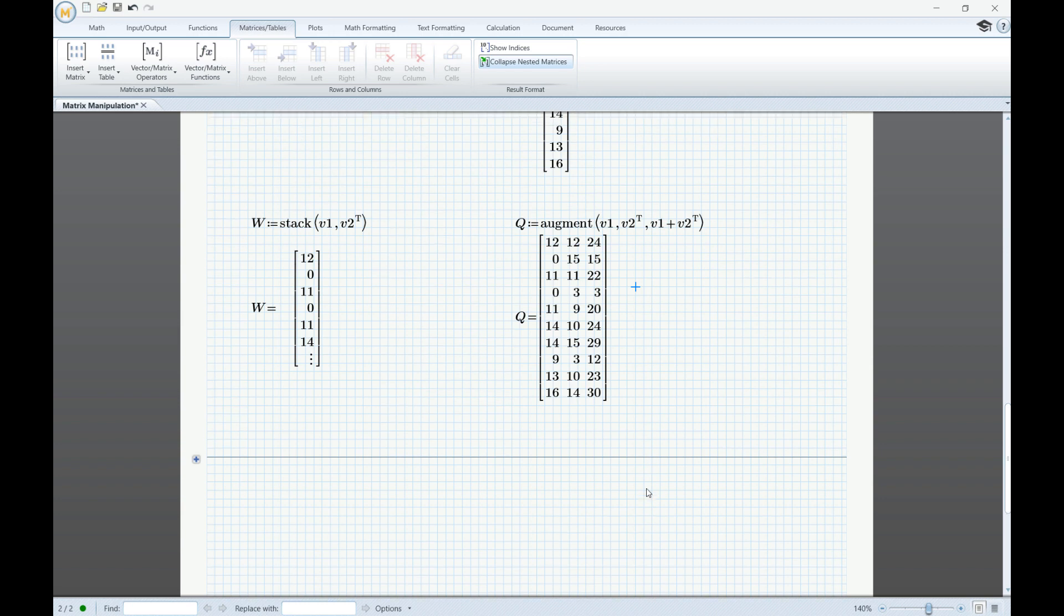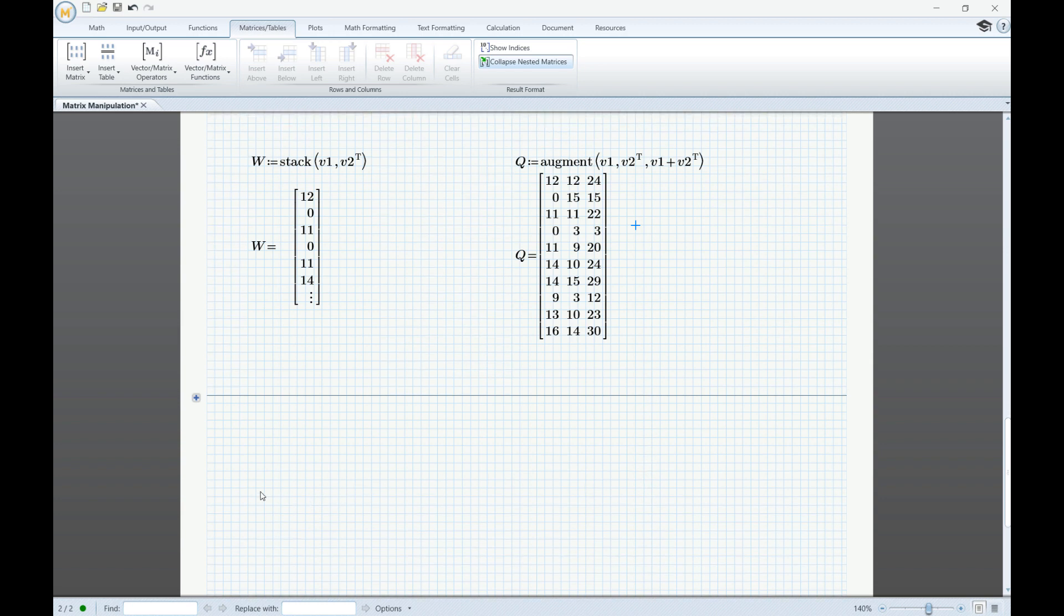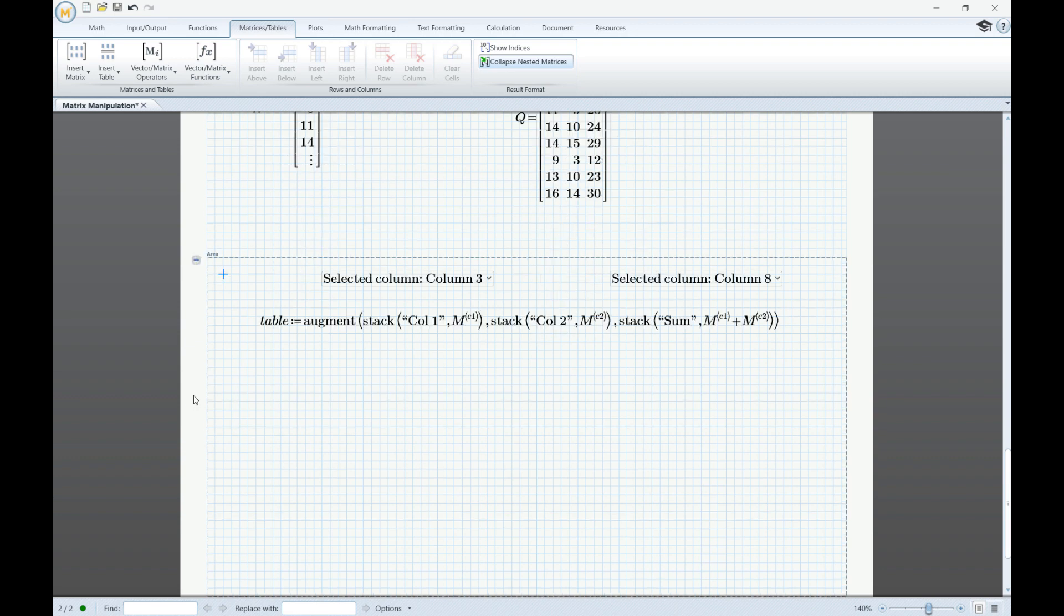Now that we saw how each of the operators and function works individually, we can combine them to perform multiple operations with a single expression. I have prepared here an example where I use multiple stack functions as argument to the augment function to create a table like array with a header, and we can also change the number of the columns that are used in the calculation by changing the selection in the drop-down lists at the top.